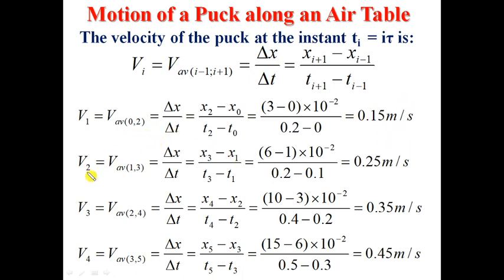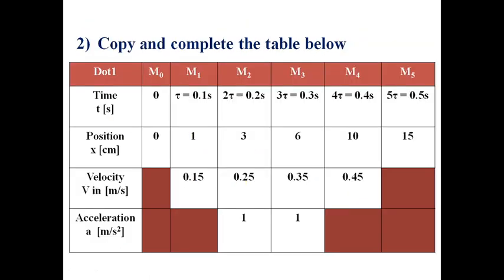Let's take, for example, the second one. If we need to find V2, dot M2, dot before is M1, dot after is M3. Therefore, V2 equals to X after, X3, minus X before over T3 minus T before. If we go back to the table, if we need, for example, to find V2, we take X after minus X before over T after minus T before.